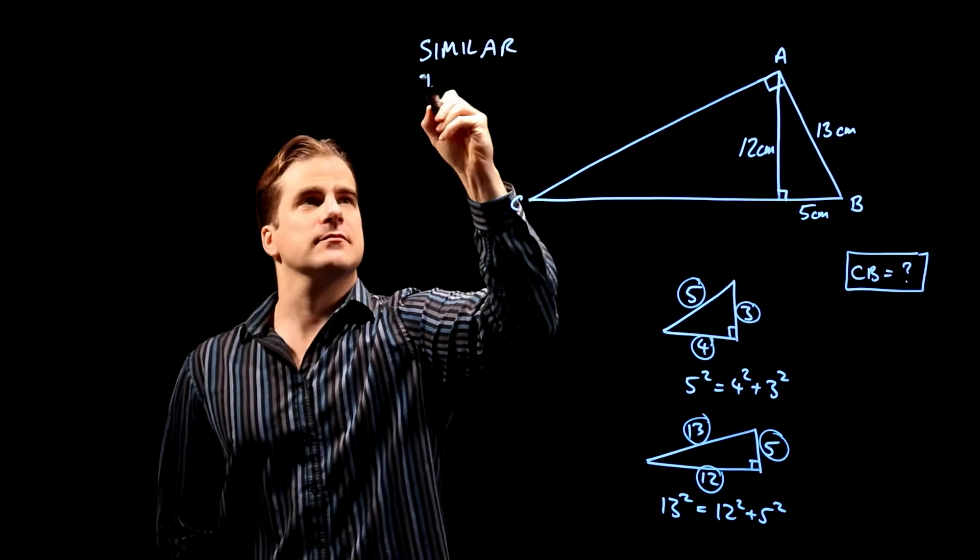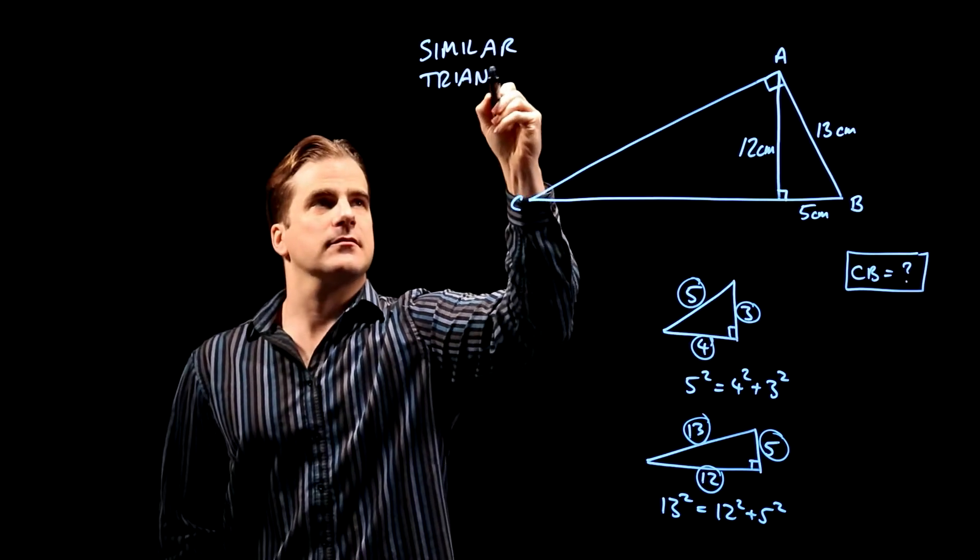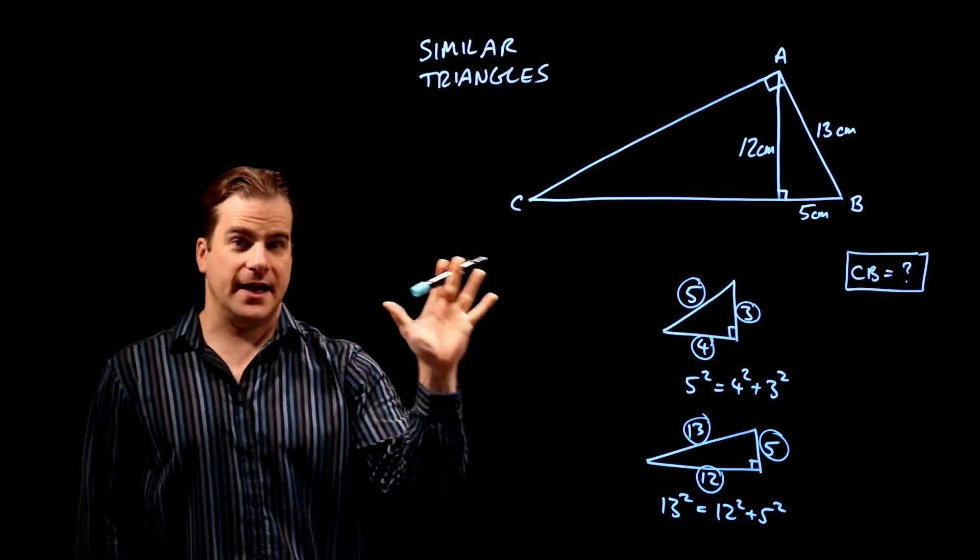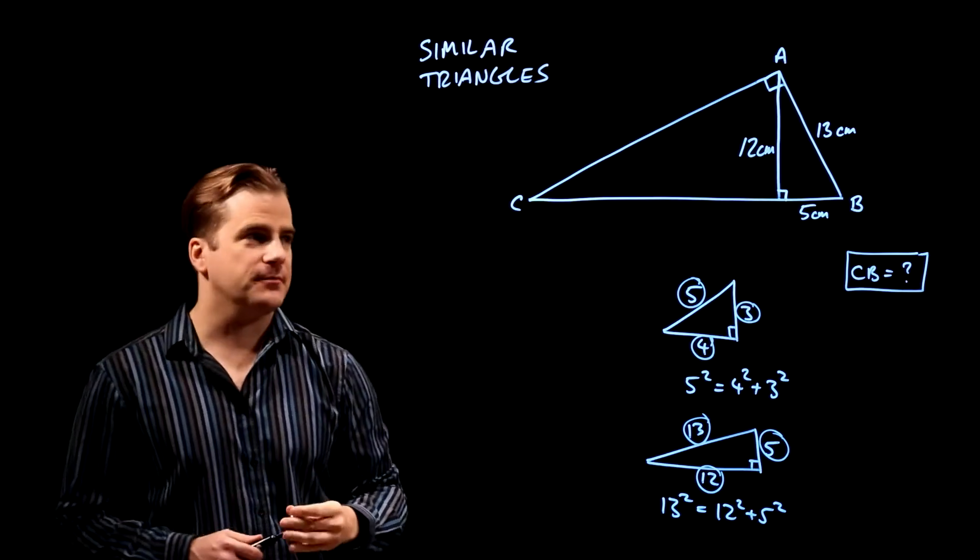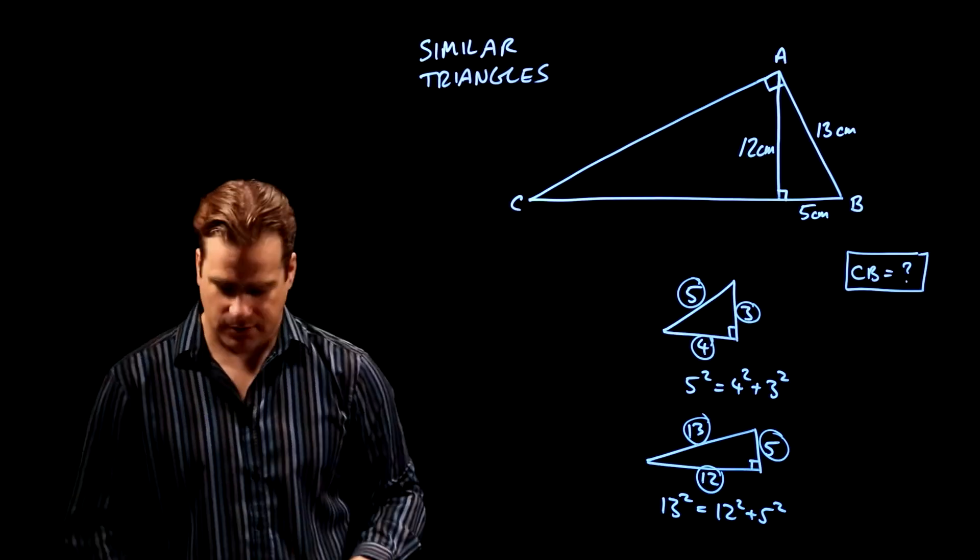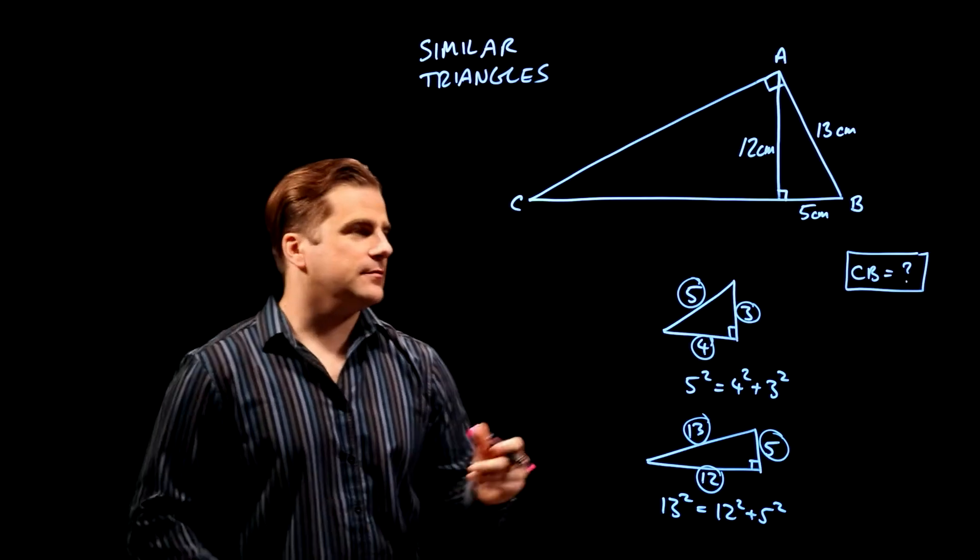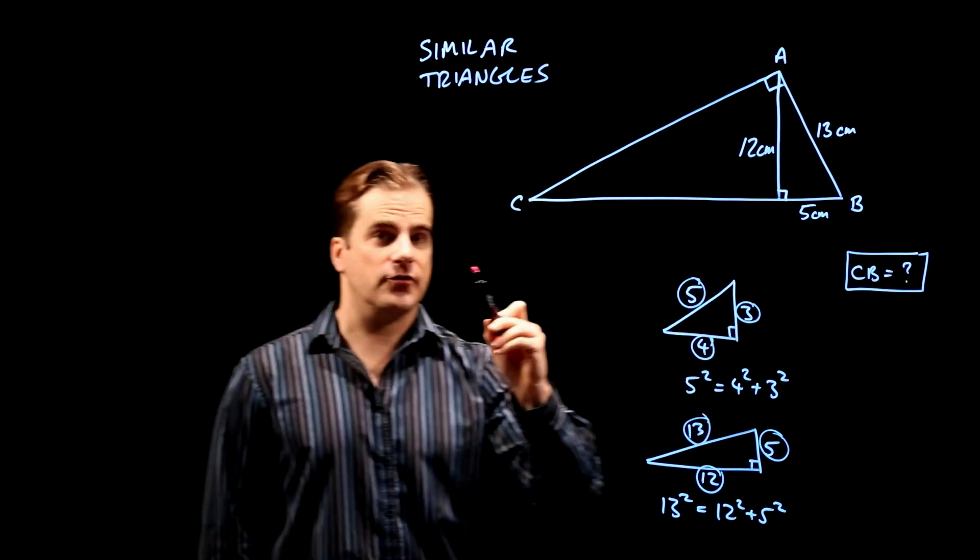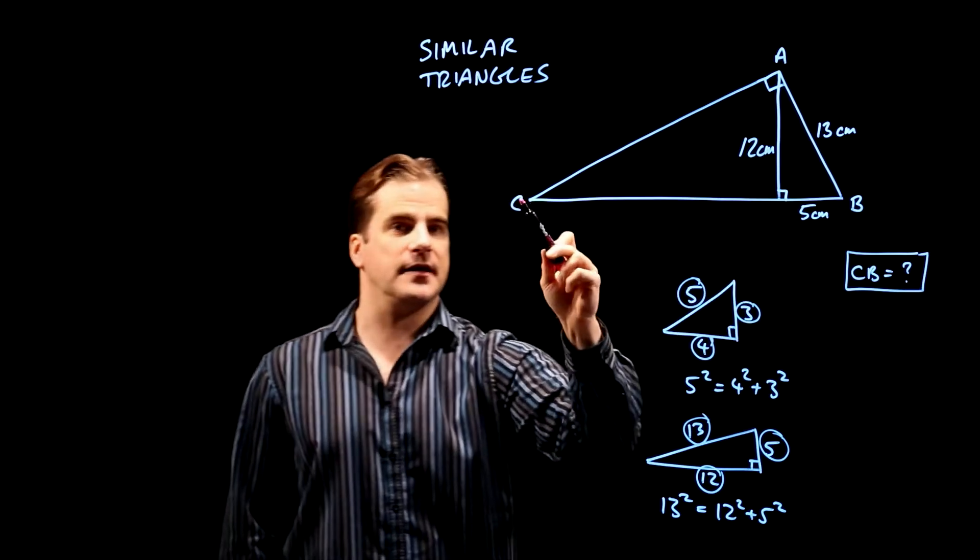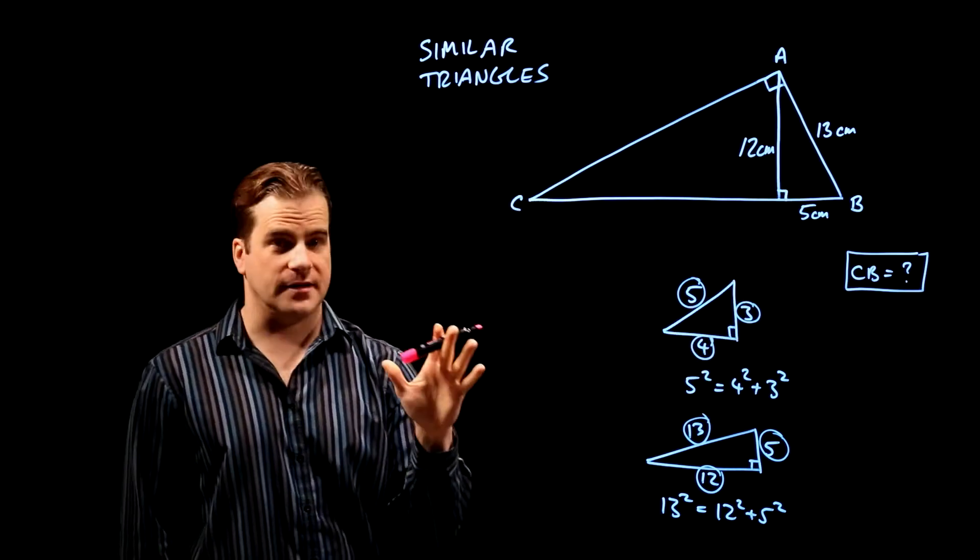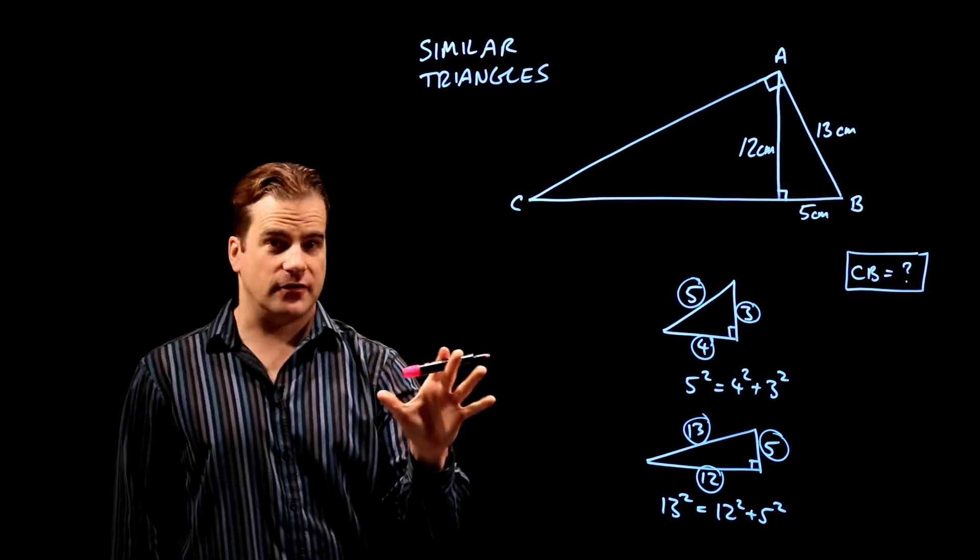And in fact, it is a similar triangles question. I'll show you what I'm talking about. The similar triangles are the big one, ABC, and this one. They are similar triangles for this reason.